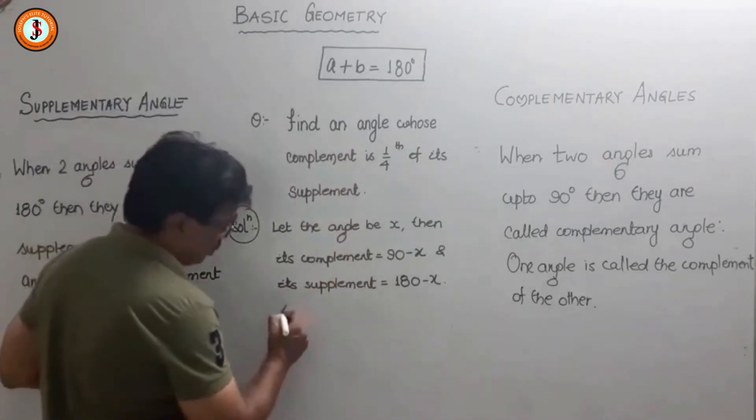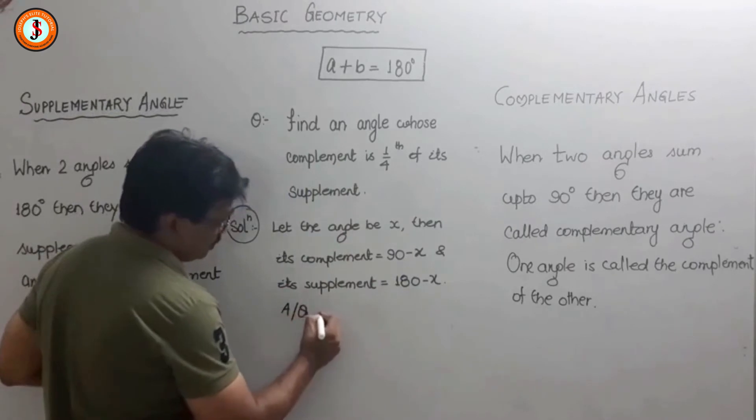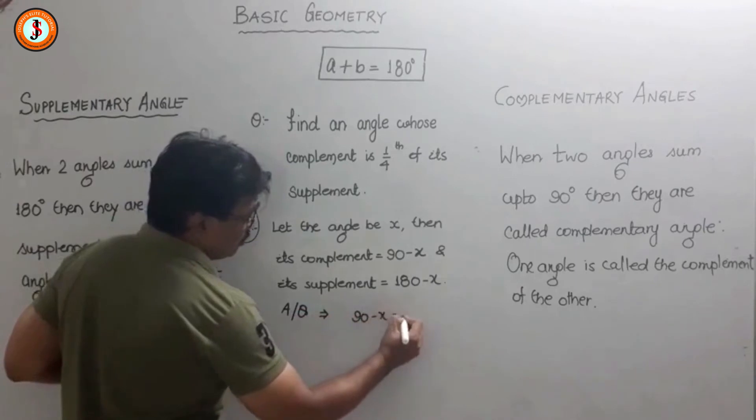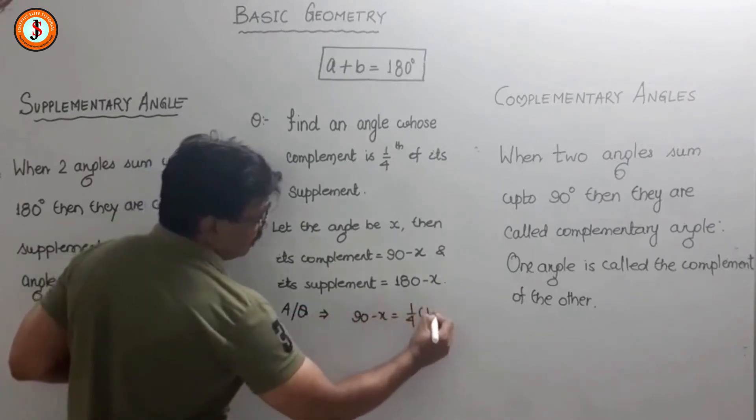According to the question, we write: 90 minus x equals one-fourth of 180 minus x.